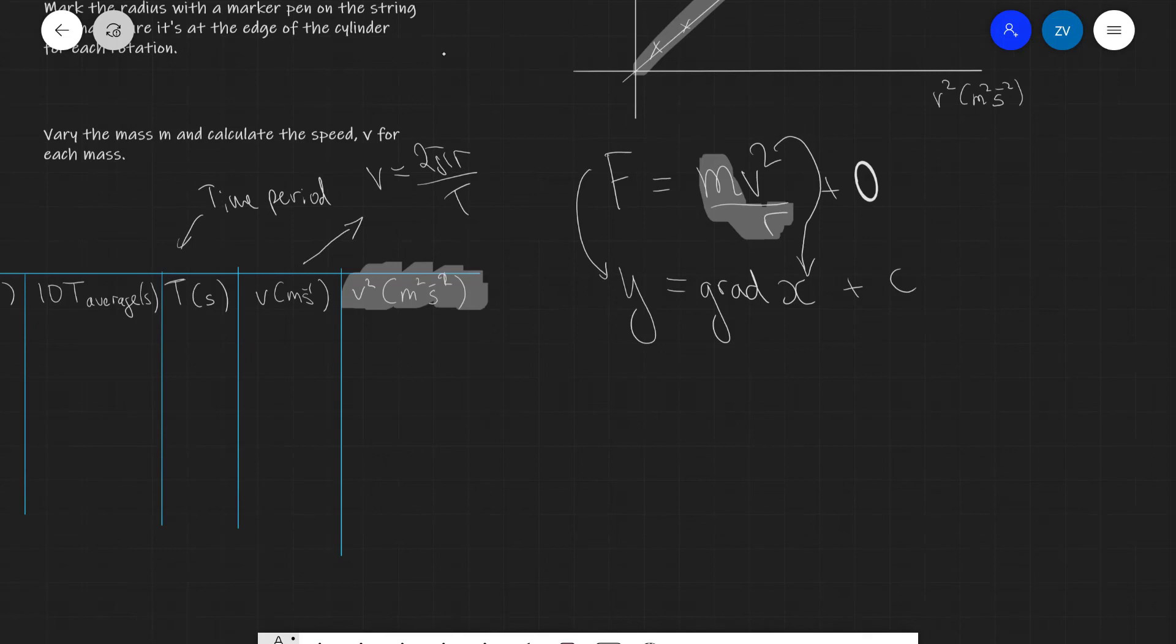The gradient, let's call that grad, is equal to m divided by r and the mass of the bung will actually be given by the gradient grad multiplied by the radius, assuming that we've managed to keep our gradient constant.